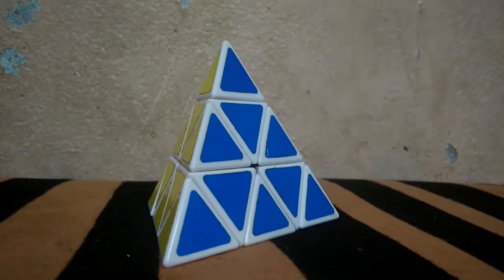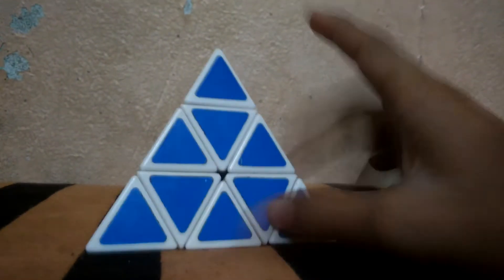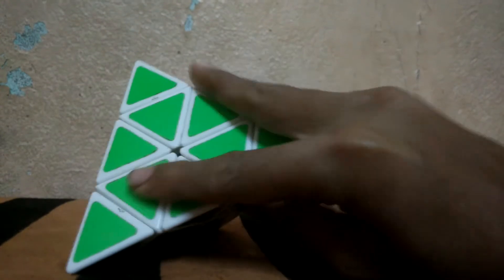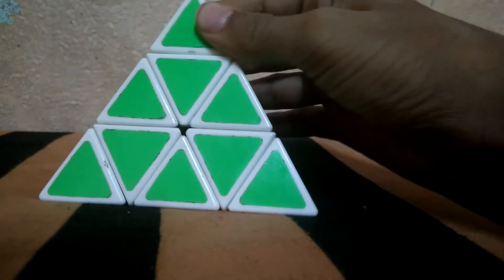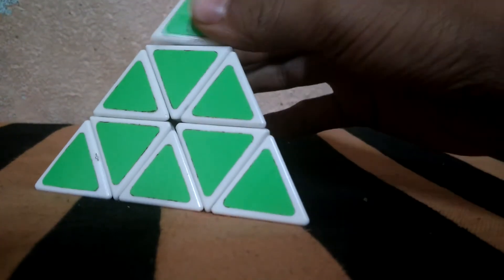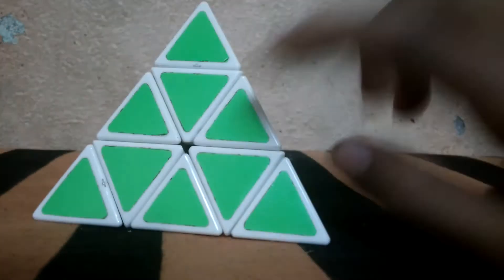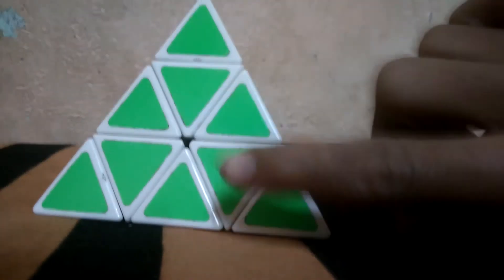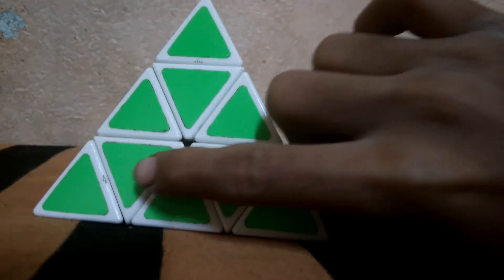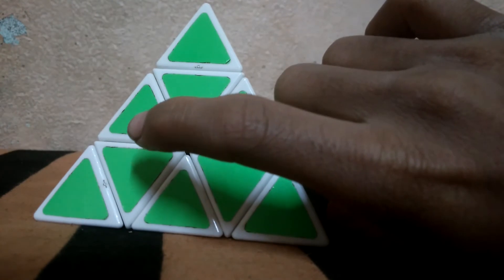Hi guys, today I'm going to show you how to solve three by three pyramids. Let's begin with the basics. These are the corners or tips, these are the middle centers, and these are the edges.